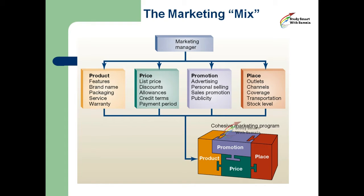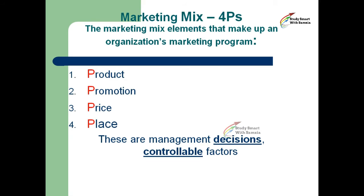The marketing mix: marketing managers branch into product, price, promotion, and place. Product covers features, brand name, packaging, service, and warranty. Price includes price list, discounts, allowances, credit terms, and payment period. Promotion covers advertising, personal selling, sales promotion, and publicity. Place covers outlets, channels, coverage, transportation, and stock — all grouped into a cohesive marketing program.